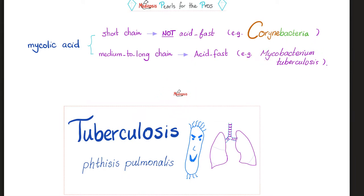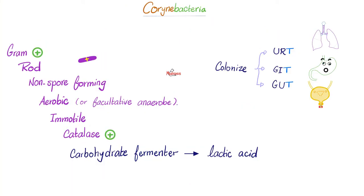Speaking of tuberculosis, there is a dedicated video on that topic in the pulmonology playlist. Corynebacteria are gram-positive pleomorphic rods, non-spore-forming, aerobic or facultative anaerobes, immotile, catalase-positive, they ferment carbohydrates, and they produce lactic acid.